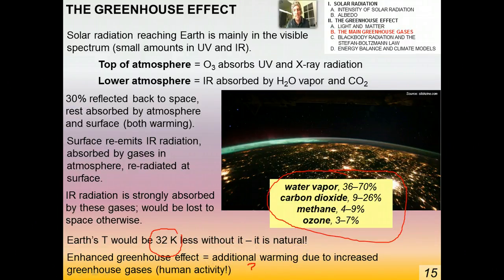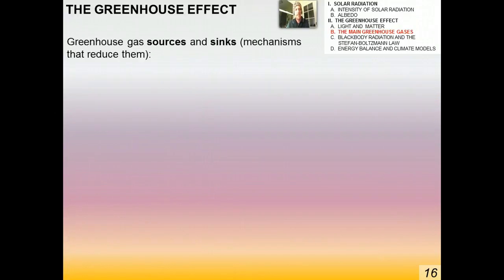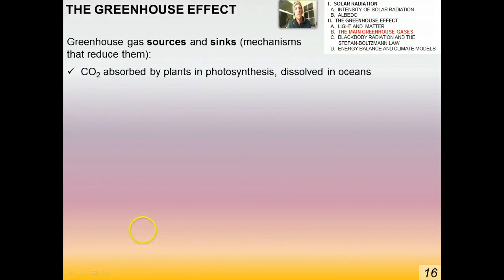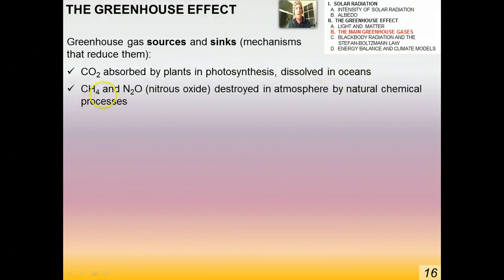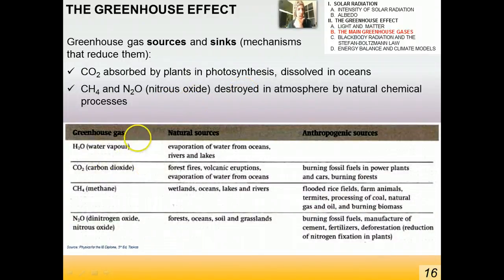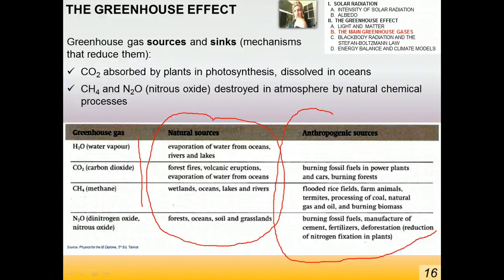The enhanced greenhouse effect is the additional warming due to increased greenhouse gases from human activity. There are different natural mechanisms for increasing and decreasing greenhouse gases, called sources and sinks. For example, a CO2 sink would be plants and vegetation, since CO2 is absorbed in photosynthesis, and it's also dissolved in the oceans. Methane and nitrous oxide are destroyed in the atmosphere by natural chemical processes. You should be generally aware of the natural and anthropogenic (man-made) sources of these greenhouse gases — you don't need to memorize all of it.